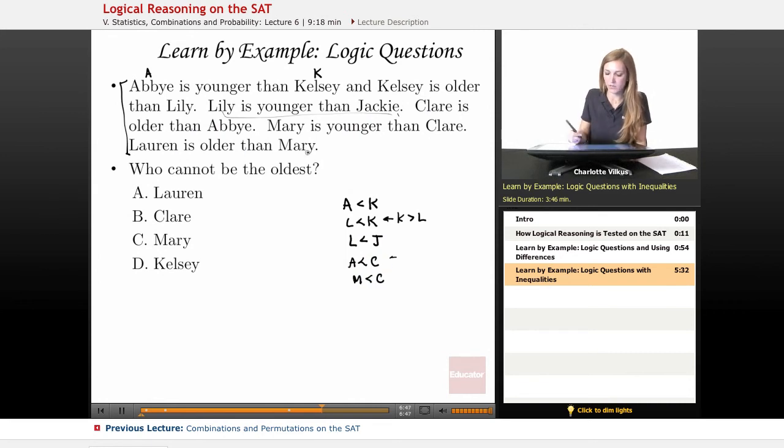And Lauren is older than Mary, so that means that M is also less than L. And here I have Lauren, not Lily, so I'm just going to put LA so I can tell the two apart.